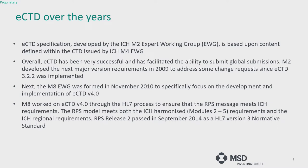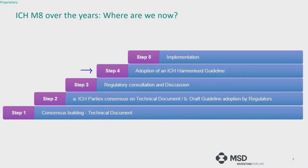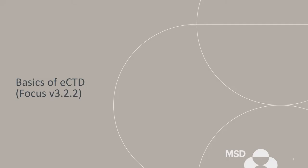The goal of eCTD as a whole is to have one globally used electronic message to transmit any form of information between the applicant and the agency, based on internationally approved and standardized methods. We are currently at step 4 — adoption of ICH harmonized guidelines — and the last step will be the actual implementation by the different agencies.